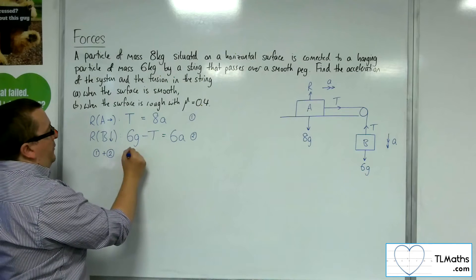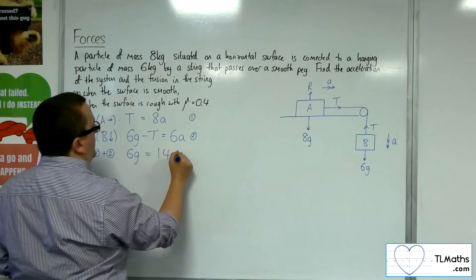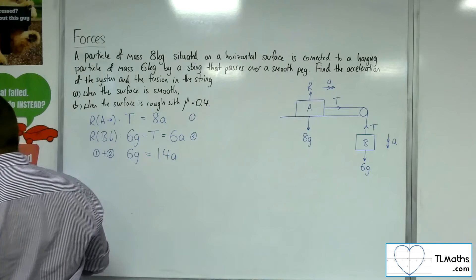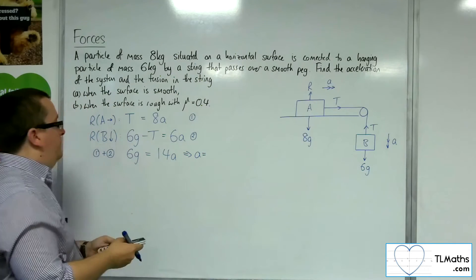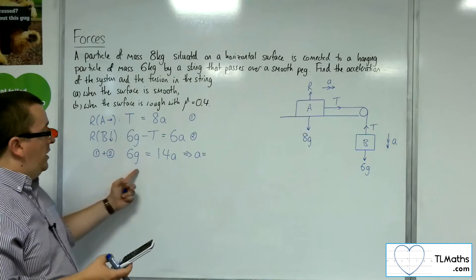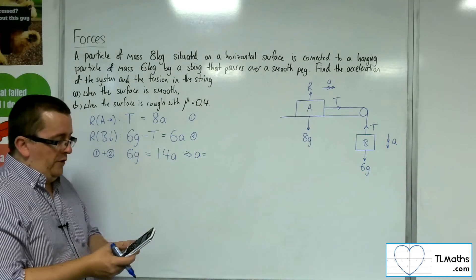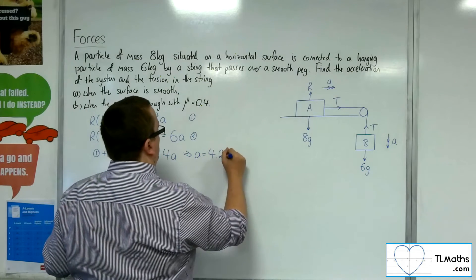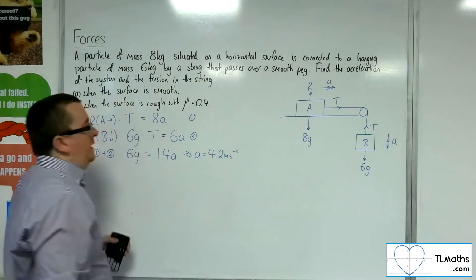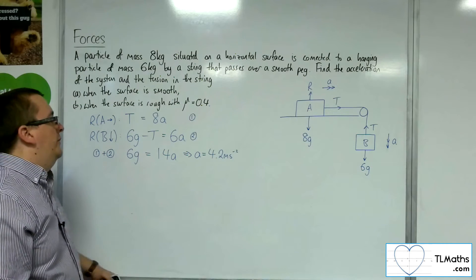I'll be left with 6g is equal to 14a. So the acceleration is 6, if I take g is 9.8, 6 lots of 9.8 divided by 14, and I get 4.2 meters per second per second. So that's our acceleration.